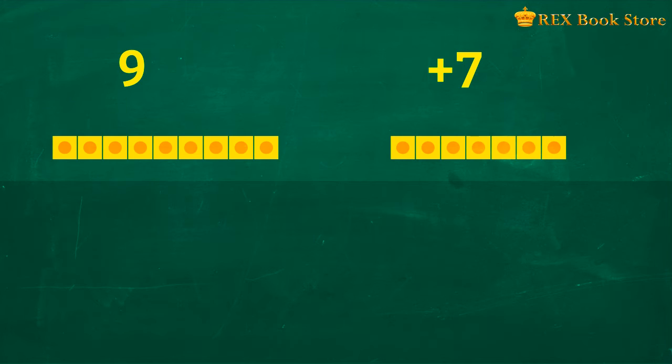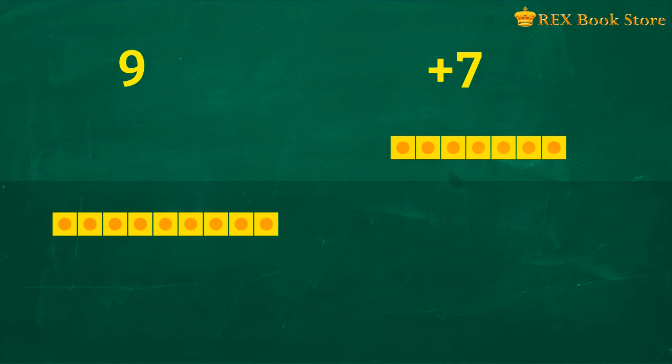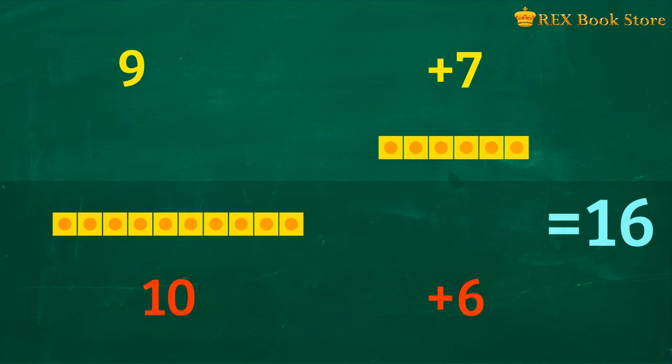Let's try another example. 9 plus 7 is equal to... We need to know how many more units we need to complete a group of 10. That's right! Just 1! So if we combine the units to make 10, how many are left? There are 6 units left. So 9 plus 7 is equal to 10 plus 6. What's the answer? 9 plus 7 is equal to 16.